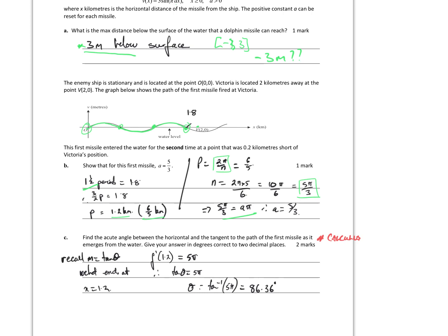Rearranging for n: 2π divided by (6/5) equals 2π × 5/6 equals 5π/3. The n value in this case is πa, so πa equals 5π/3, meaning a equals 5/3. For the acute angle between the horizontal and the tangent at the exit point — m equals tan θ, where m is the gradient equal to the derivative at that point. We'll worry about that when we get to calculus.